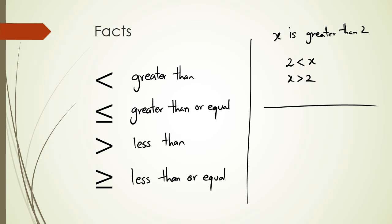So if I want to say y is less than or equal to 5, then I could say y is less than or equal to 5. That's one way of writing it. Or the other way is 5 is greater than or equal to y.